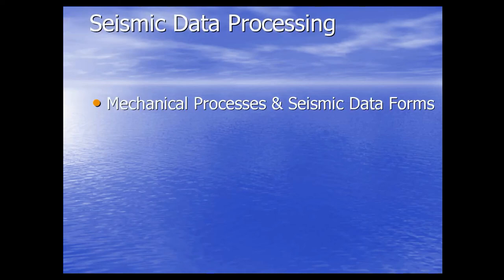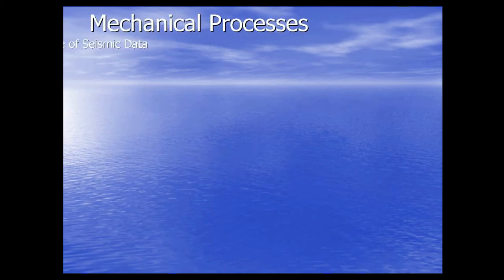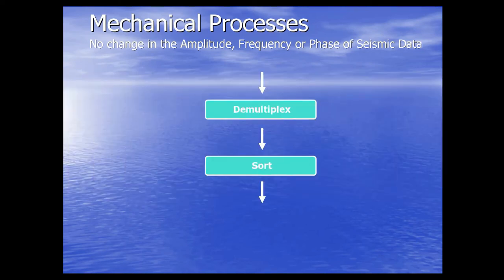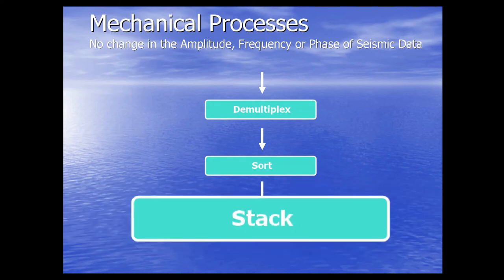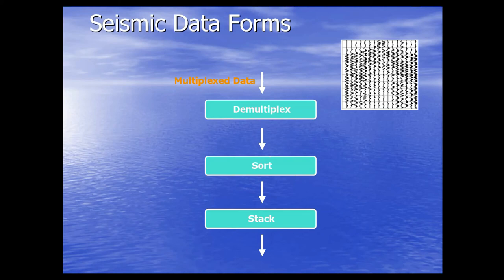Now we move into seismic data processing. We have mechanical processes, seismic data formats, interactive processes, basic processing flow, and detailed processing workflows. In mechanical processes there is no change in the amplitude, frequency, or phase of the data. Mechanical processes include demultiplexing — changing from multiplex data (shot order) to trace order data — then sorting and stacking. In multiplexed data the sequential data is stored by source and receiver; demultiplexing changes it from row order into column order, which is trace sequential data.